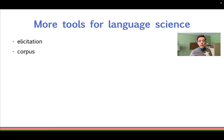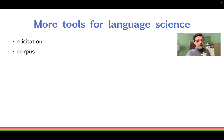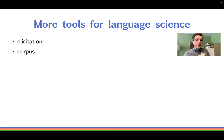The nice thing about tools like acceptability judgments, surveys, and corpora is that they're relatively easy to use. You don't need a lot of training or money to ask people what word they use for athletic shoes, or to see how a word or phrase is used in a corpus. We'll use some of these accessible tools throughout this book.